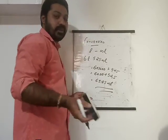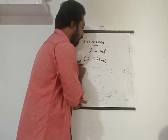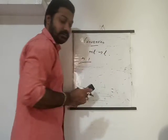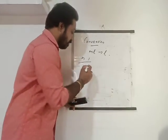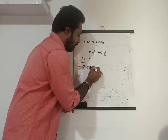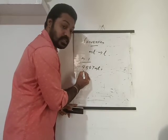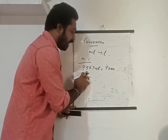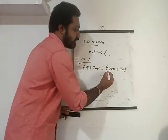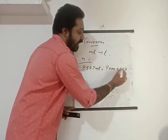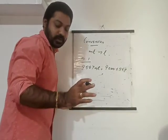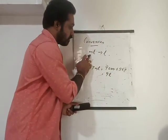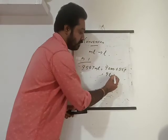Now for milliliter to liter conversion — there are two methods. Method one: count how many thousands are in the number. For example, nine thousand five hundred and sixty-seven ml — how many thousands? Nine thousand. So that gives nine liters, and the remaining is five hundred and sixty-seven ml. Answer: nine liters and five hundred and sixty-seven ml.